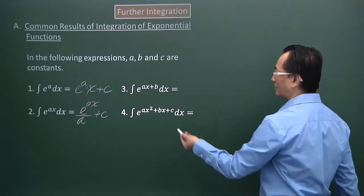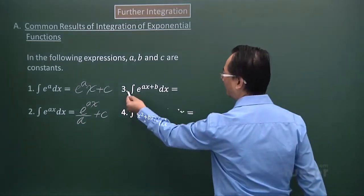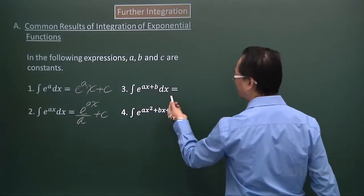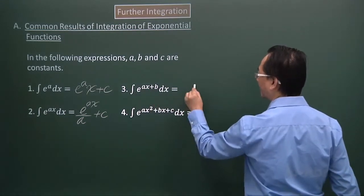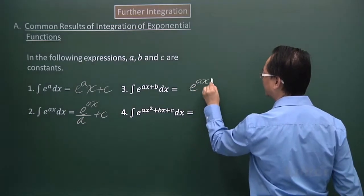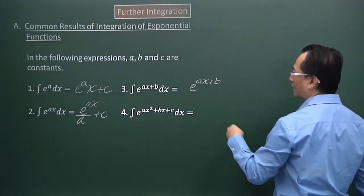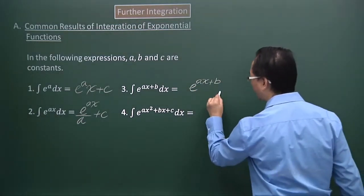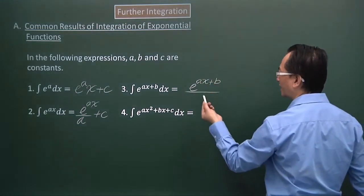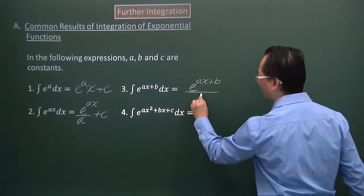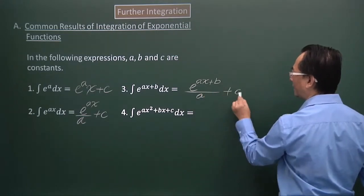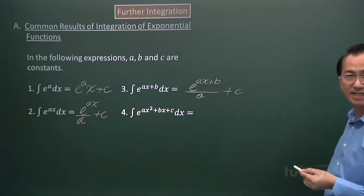For part 3, this is a linear expression. Again, I will just rewrite that expression, then divide by the result of differentiating the index expression. When I differentiate the index, I get A, and then I add the arbitrary constant C.